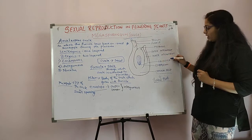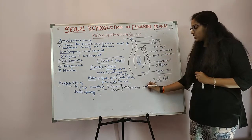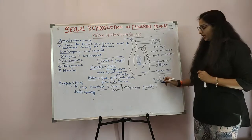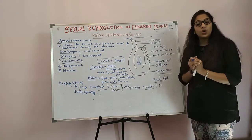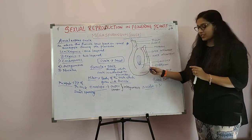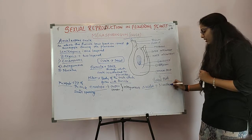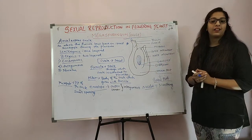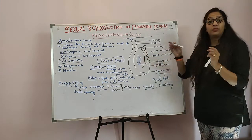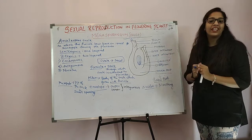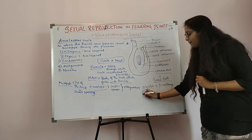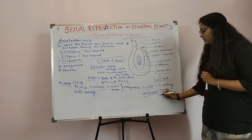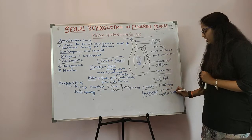There is one more tissue here called the Nucellus. It is a nourishing tissue — it has preserved food material so that it nourishes the developing Embryo Sac. The Embryo Sac, or the Female Gametophyte, is located in the Nucellus region.